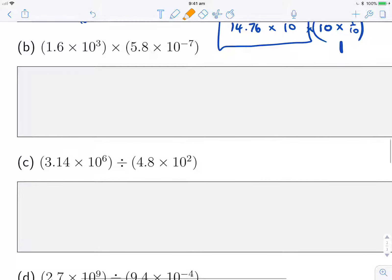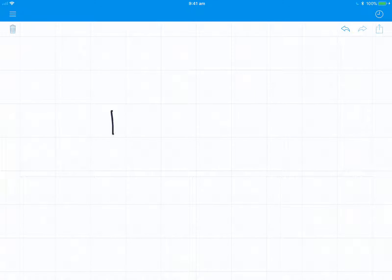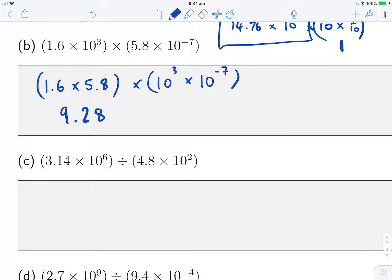With the second example, it's another multiplication, so the same thing. I can write this as 1.6 times 5.8 multiplied by 10 cubed times 10 to the negative 7. For the first bit, 1.6 times 5.8 gives me 9.28. And then here I've got my powers, 10 to the 3 times 10 to the negative 7. Remember, I'm adding those numbers together, so 3 plus negative 7 is the same as 3 minus 7, which gives me negative 4. So this is 10 to the negative 4. And in this case, I don't need to do any extra simplification because this is already between 1 and 10.